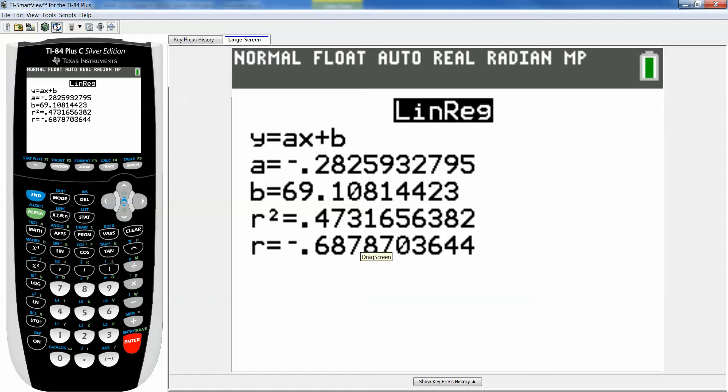And you can see at the top it tells you the order. It's saying Y equals AX plus B. That's your order. A goes in for A, so negative 0.2825 or negative 0.2826. That's your A value. And your B is 69.1081.